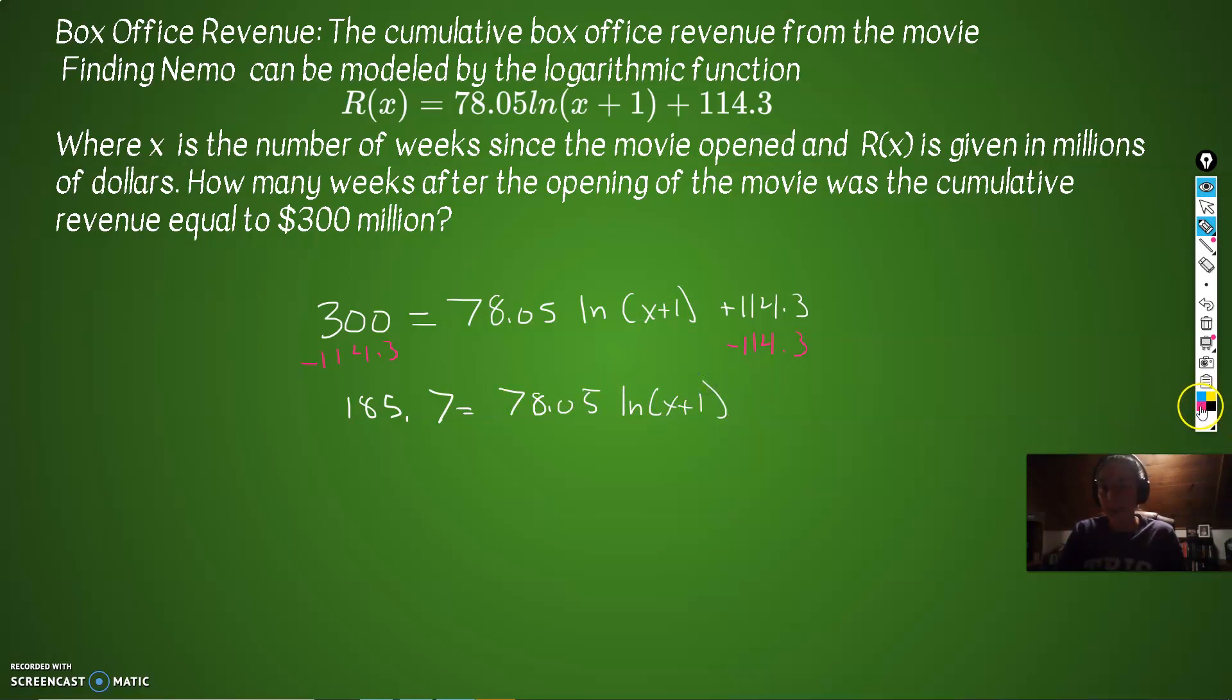So we're going to divide both sides by that. What we're trying to do is we're trying to isolate the ln on the right. 185.7 divided by 78.05 gives us 2.38.